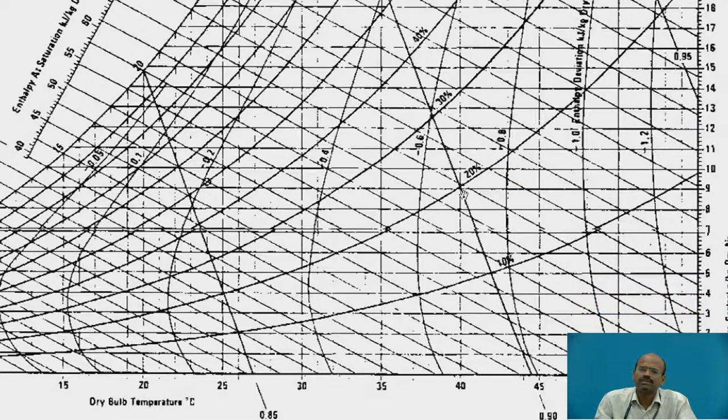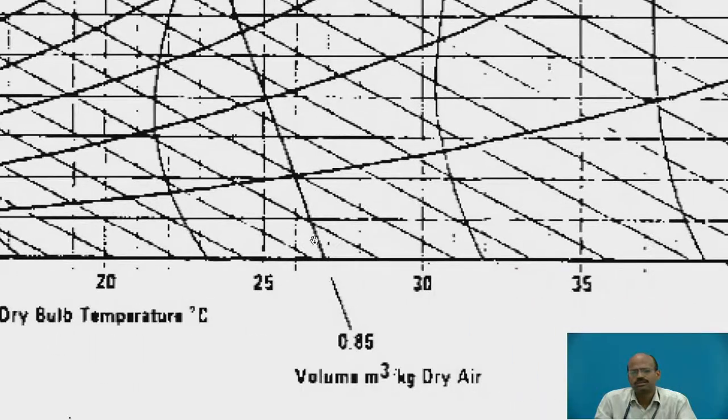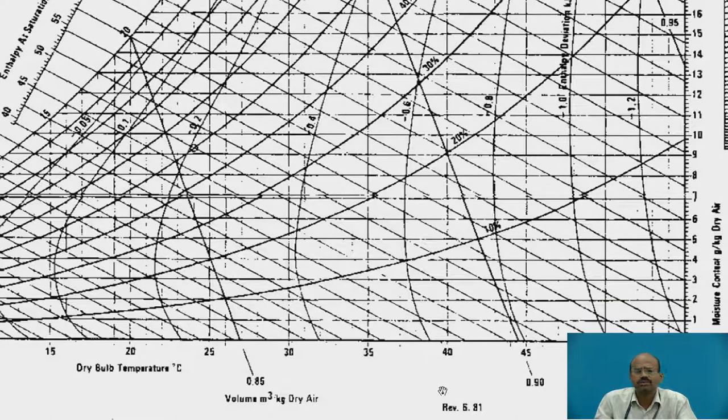Next property is the specific volume. These inclined lines are specific volume lines. This specific volume line is having 0.85 meter cube of volume per kg of dry air. If it lies in between these two constant specific volume lines, by using the compass, you have to divide this distance into equal parts and proportionate value will be getting from the psychrometric chart, because this is the graphical method.